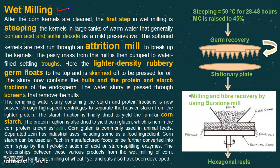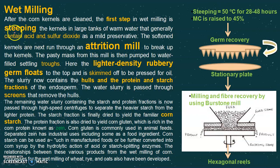This was all about dry corn milling. Now let us study wet milling of corn. In wet milling, the end products are pure starch and pure protein. We have to remove the germ, hull, and tip cap, and then once we get the endosperm, we separate it into pure starch and pure protein. The first step after cleaning the grains is steeping.